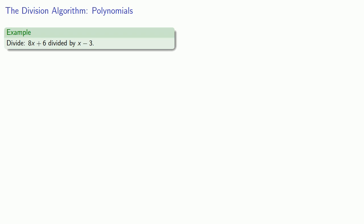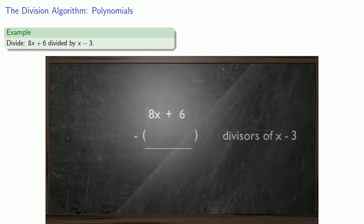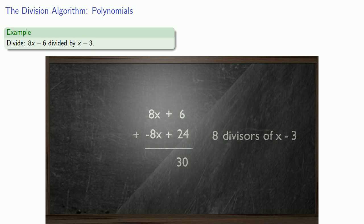We can do the same thing with polynomial divisions. When we divided 8x plus 6 by x minus 3, our subtraction looks like this. But if we rearrange things so they look like the long division algorithm, the divisor is going to come out front here, and we'll keep track of the quotient above and subtract below.